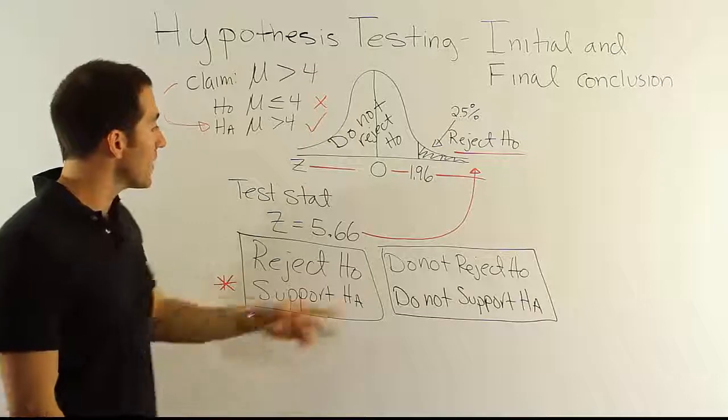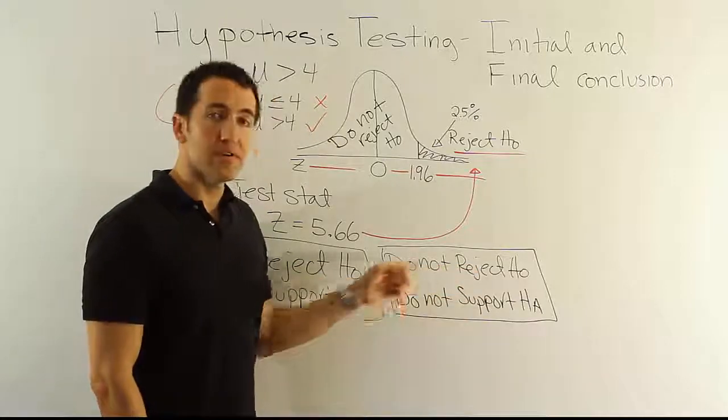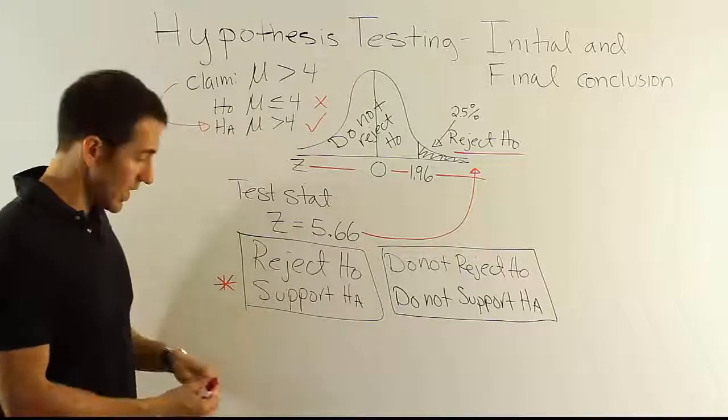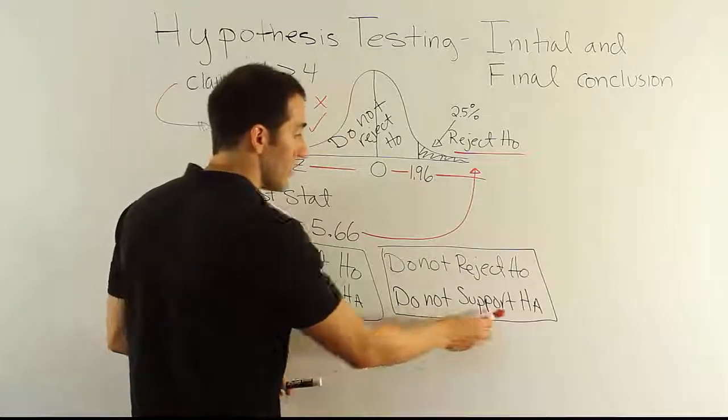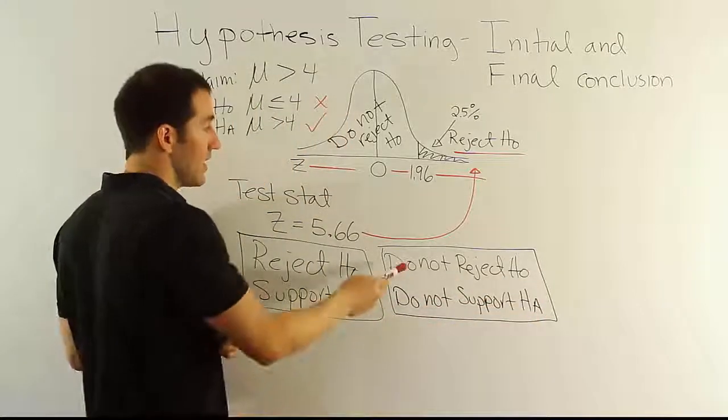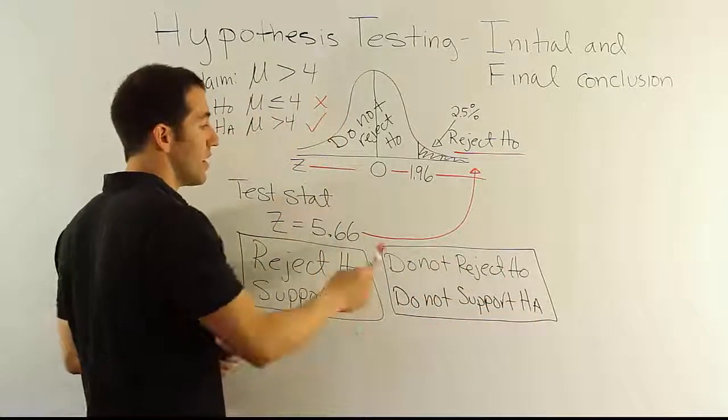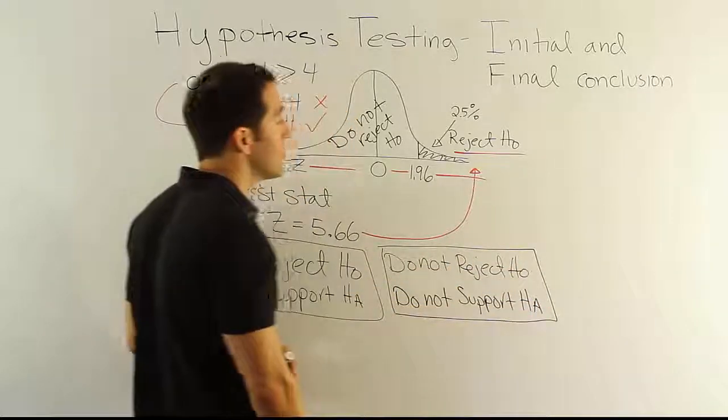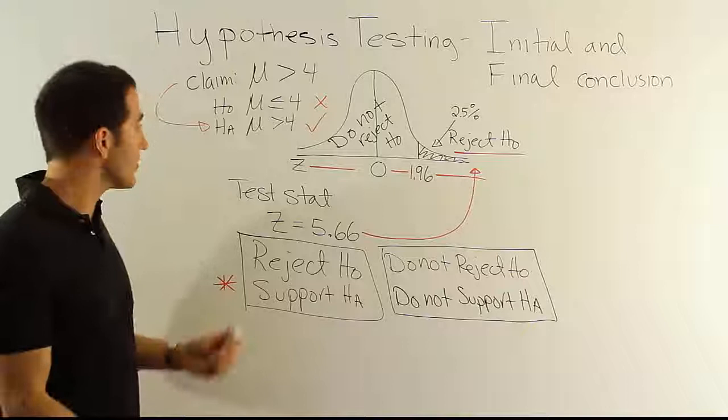Now, if we had come to this decision or pair of decisions, again, our claim would have been HA, and we would still have to say here, this. So we'd have to say the sample data does not support the claim. Or we could say, if the claim was H0, the sample data does not allow us to reject the null hypothesis, something like that. So that's essentially your phrasing.